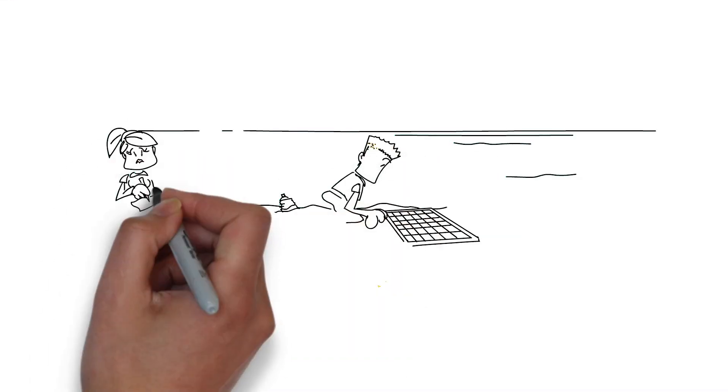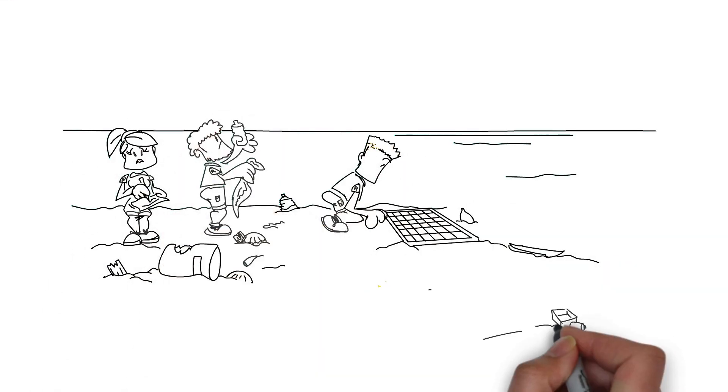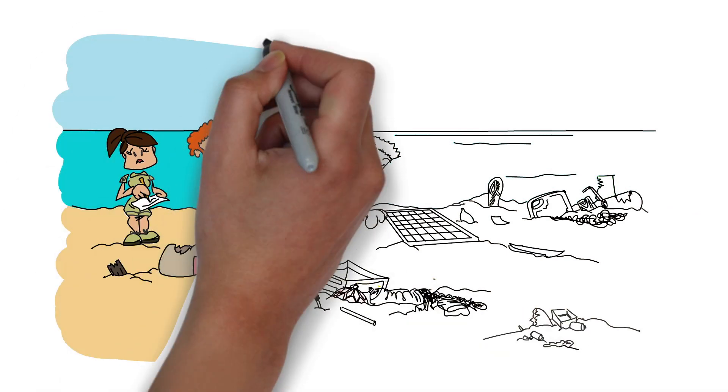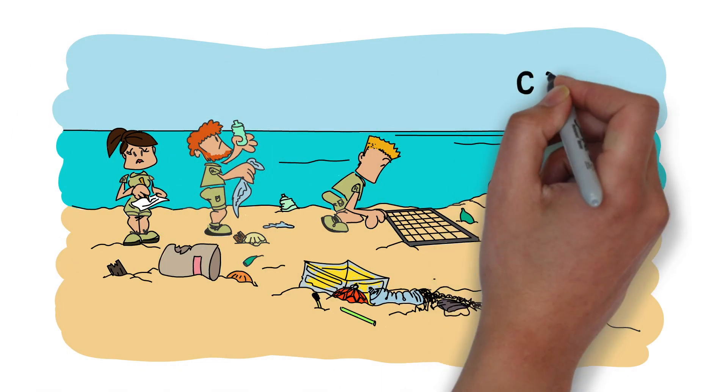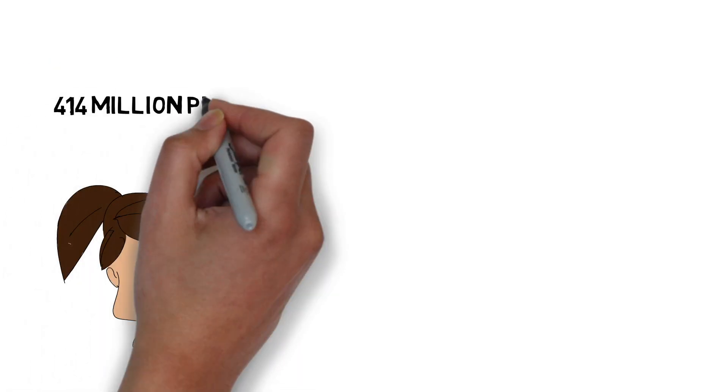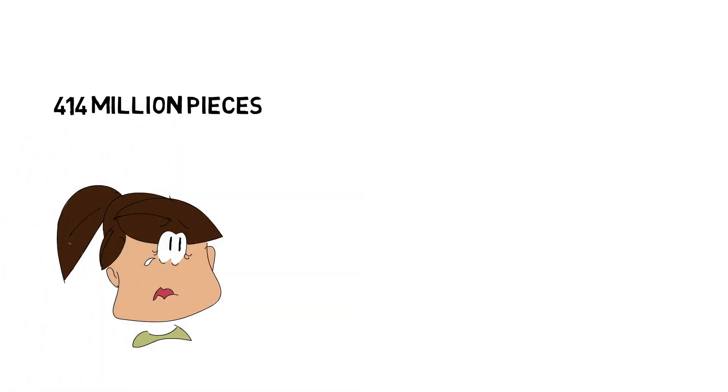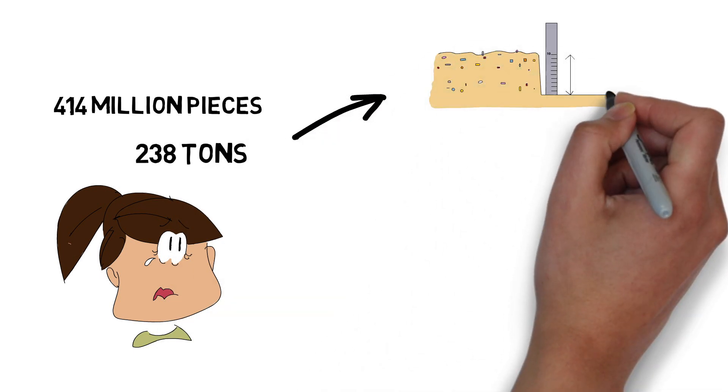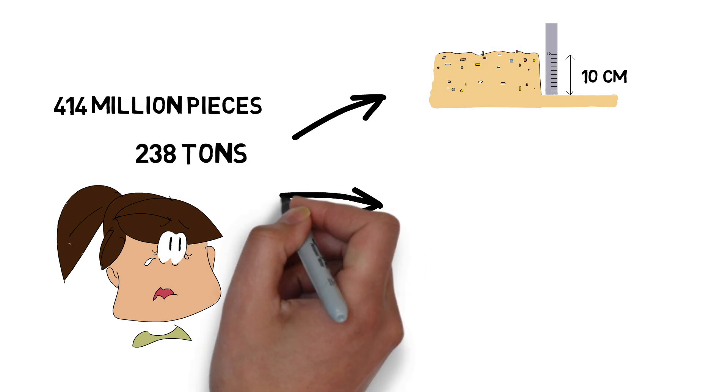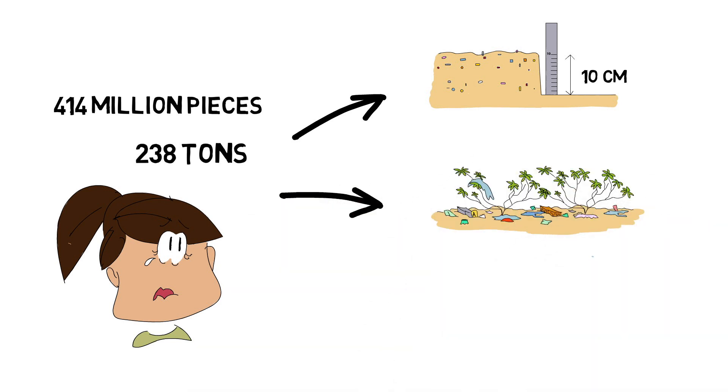A team of scientists and volunteers surveyed the Cocos Keeling Islands, a remote atoll of islands located 2,100 kilometres off the northwest coast of Australia. The survey estimates 414 million pieces of debris items, weighing 238 tonnes, currently deposited in the first 10 centimetres of beach surface and 10 metres of beach-back vegetation.